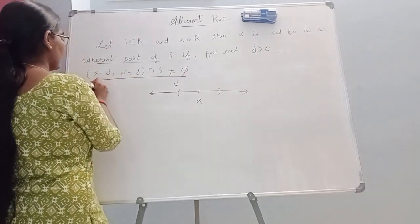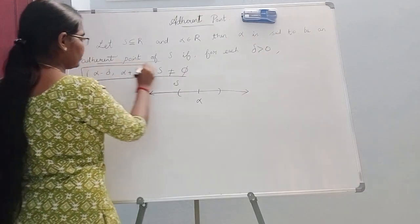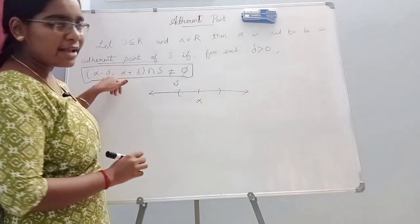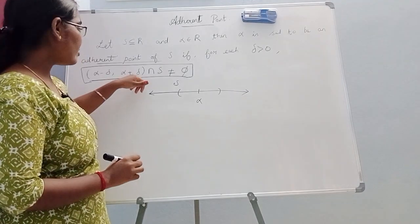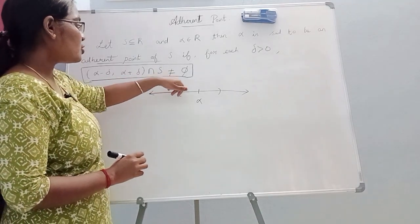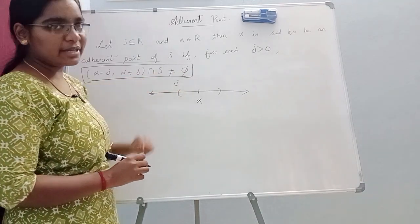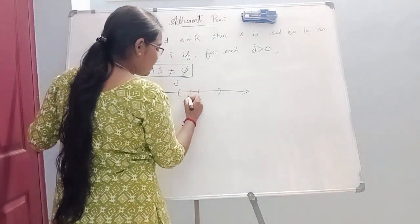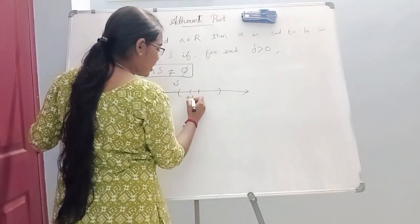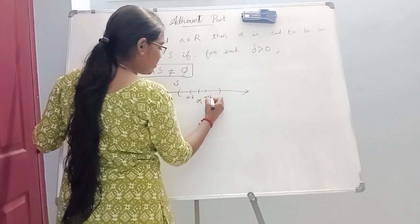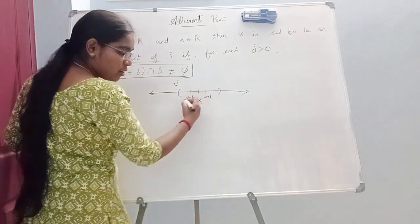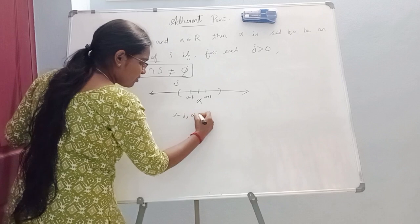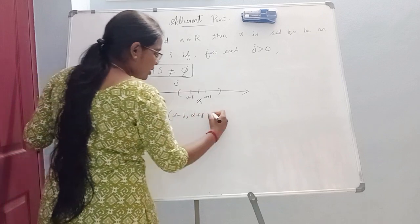We will satisfy this condition. So what is the condition? Alpha minus delta, alpha plus delta — the intersection with S is not equal to an empty set. So delta is mentioned in the neighborhood: alpha minus delta, alpha plus delta. Let's take this neighborhood.